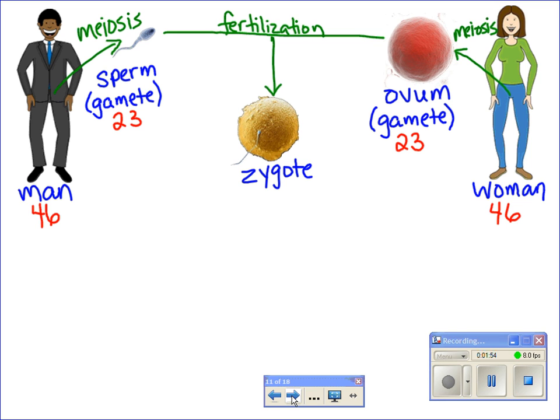So a zygote is an egg cell that has been fertilized by a sperm. So a fertilized egg cell where the nucleus of the sperm and the nucleus of the ovum fuse together. So we add 23 chromosomes from the sperm, 23 chromosomes from the ovum, and you end up with 46 chromosomes in the zygote. And that's the start of a new human.